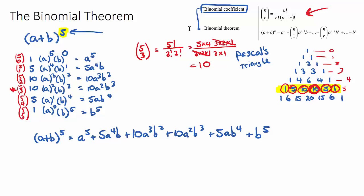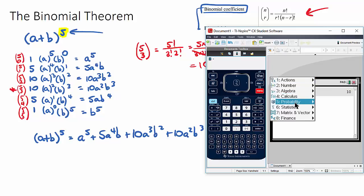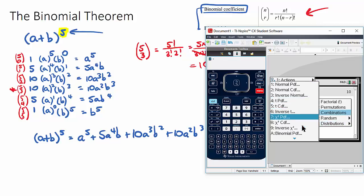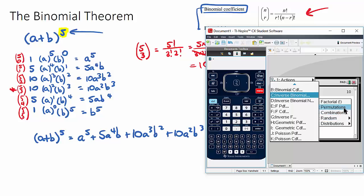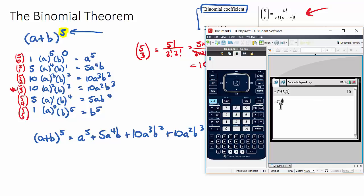If you have a calculator, you can type in nCr and put five comma three and it gives you ten. On different calculators it's usually found in the probability or combinations section — look for nCr.